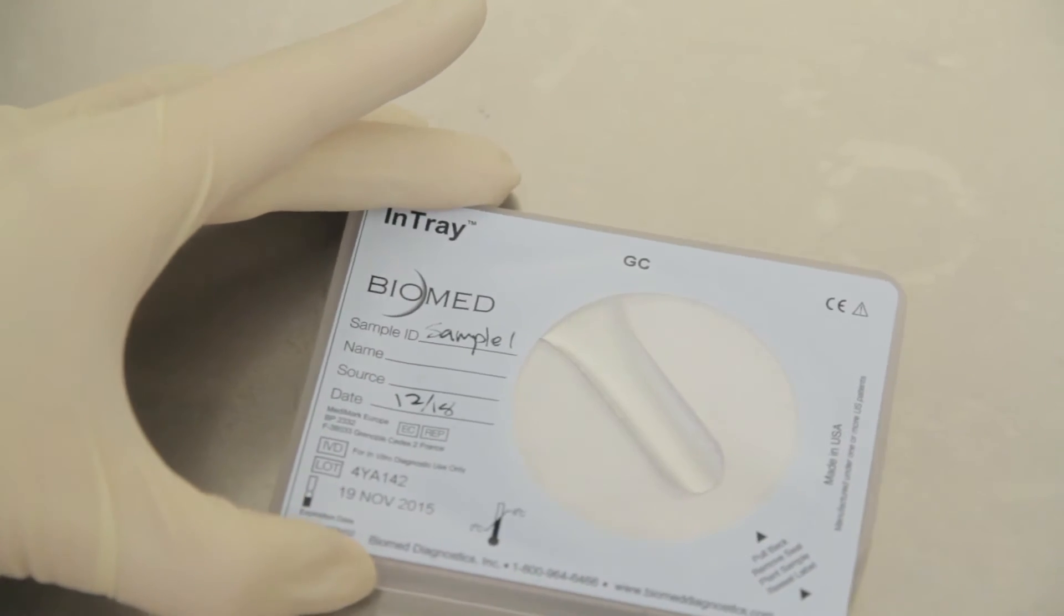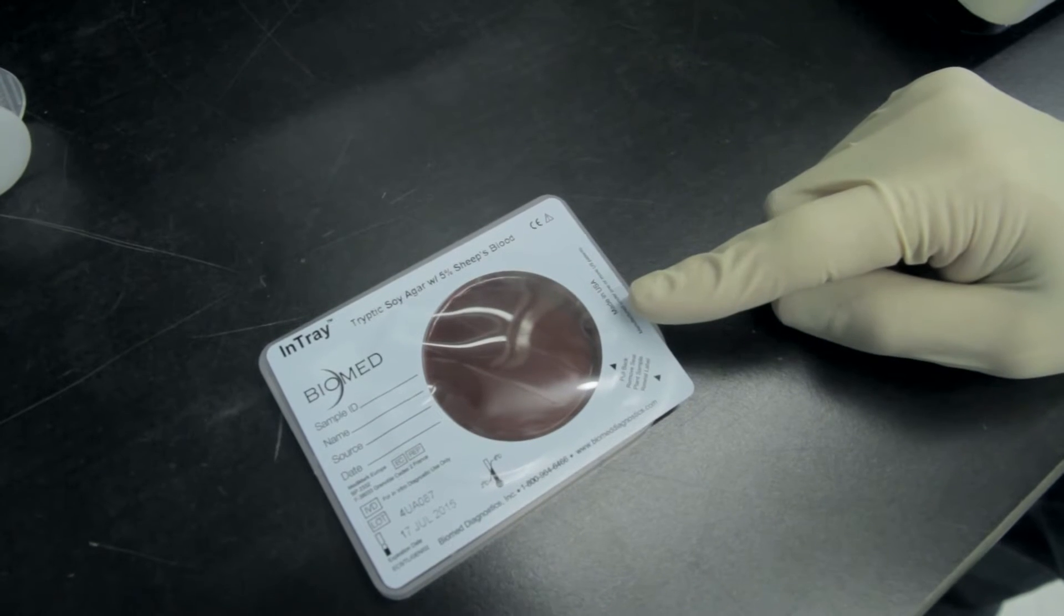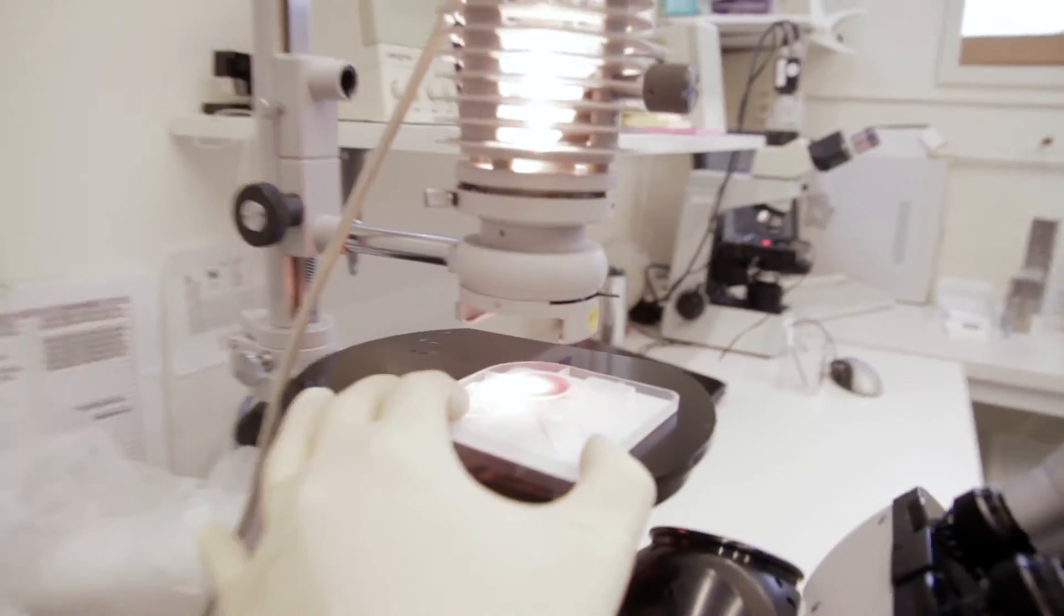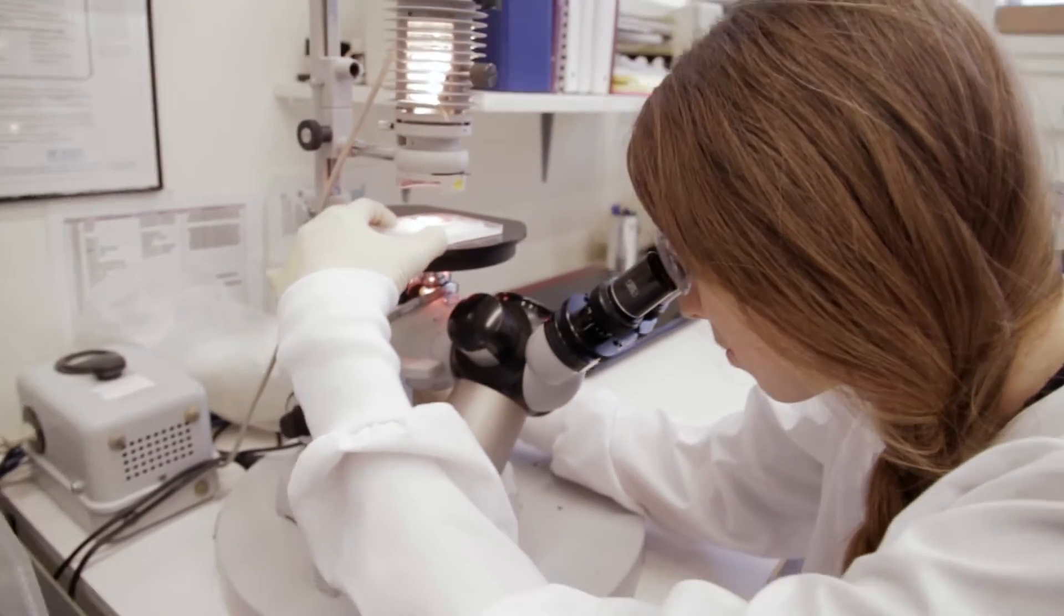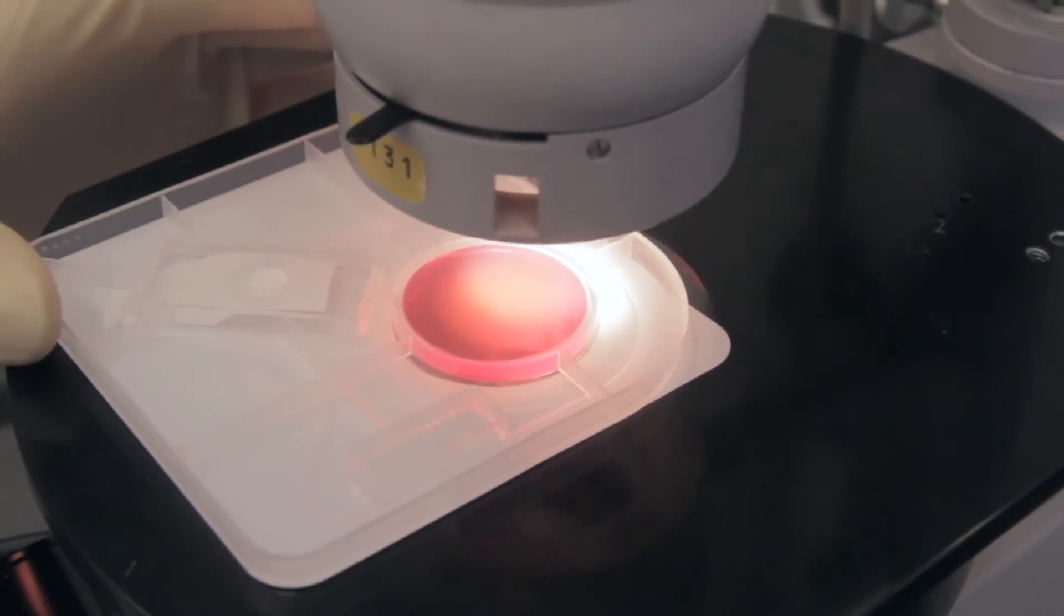Looking on top, each in-tray device provides space to document your sample on the included label. The label also provides an optically clear viewing window to monitor growth. When ready for close examination, this window has the added benefit of direct microscopy without the need for an additional wet mount slide.